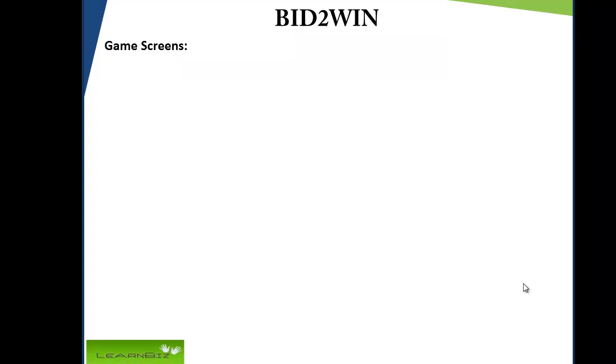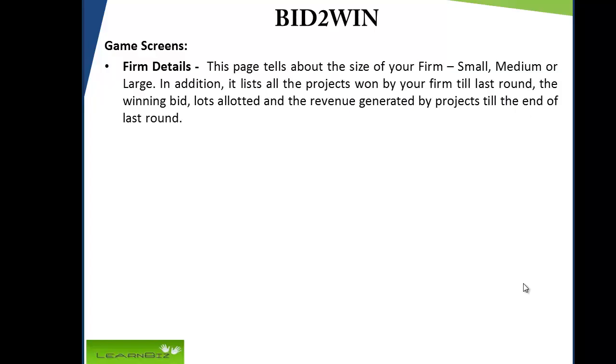Game screens: the screen description is intended to give you a preview of what is in store in the game. It is critical to clearly understand the screens here, although there is no replacement for in-game practice. Firm details: this page tells about the size of your firm — small, medium or large. In addition, it lists all the projects won by your firm till the last round, including the winning bid, lots allotted, and the revenue generated by projects till the end of last round.